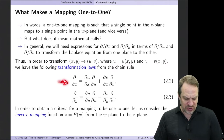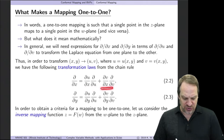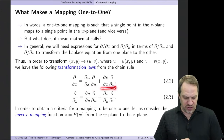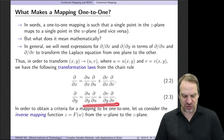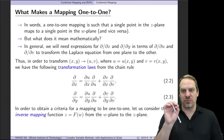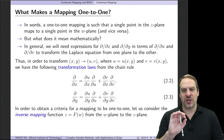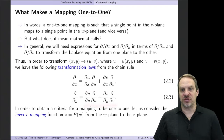Here are the transformation laws. The first one: ∂/∂x = (∂u/∂x)(∂/∂u) + (∂v/∂x)(∂/∂v). The second one: ∂/∂y = (∂u/∂y)(∂/∂u) + (∂v/∂y)(∂/∂v). So these are the transformation laws we would use — any ∂/∂x, we substitute the first; any ∂/∂y, we substitute the second.